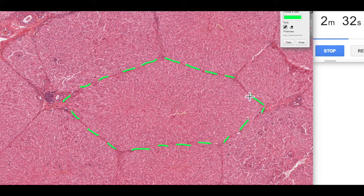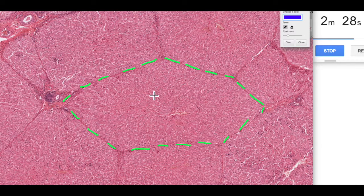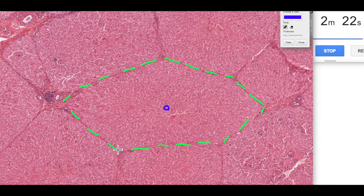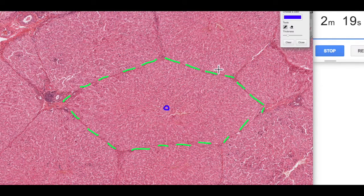We've got our central vein in the middle, and the idea is that we've got these six points which are our portal regions or our portal triads.